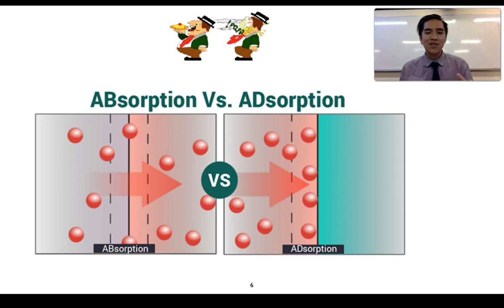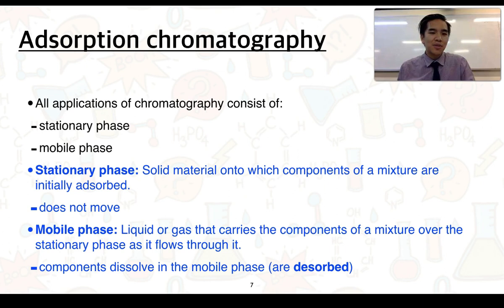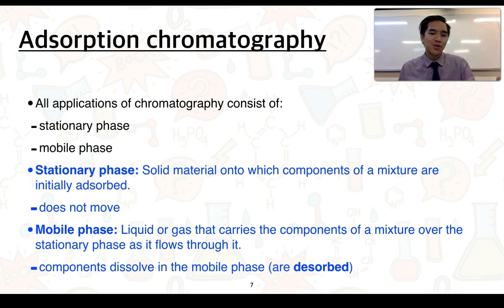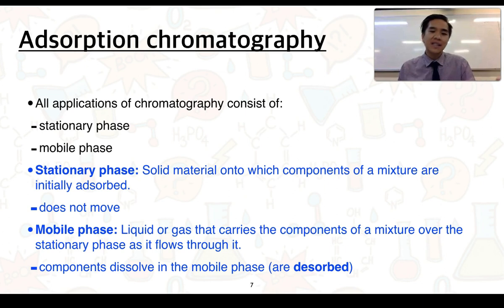Adsorption chromatography will, in all cases, consist of a stationary phase and a mobile phase. The stationary phase is a solid material onto which components of a mixture are initially adsorbed. The word stationary means not to move, so these stationary phases do not move in a chromatography setup. The mobile phase is often a liquid or a gas that carries the components of a mixture over the stationary phase as it flows through it.